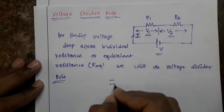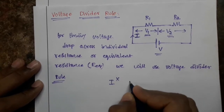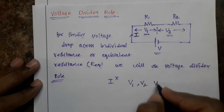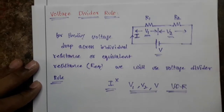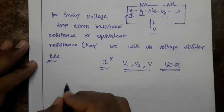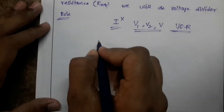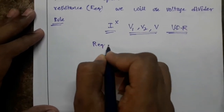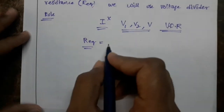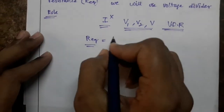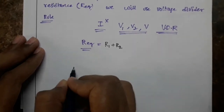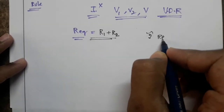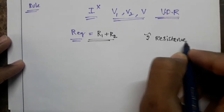Without knowing the current value, we can find V1, V2, and the total voltage. By the voltage divider rule we can find V1, V2, and the total voltage. Coming to the equivalent resistance: R equivalent equals the sum of the individual resistances, that is R1 plus R2, since the two resistances are connected in series.